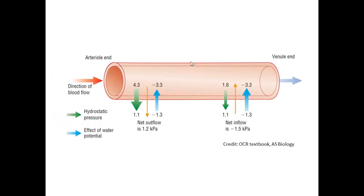Let's have a look at some numbers. These are numbers taken from your OCR textbook and in the arterial end we have green arrows representing hydrostatic pressure - apologies if you are red-green colour blind, hopefully it is not too much of a problem. And 4.3 kilopascals in there and 1.1 kilopascals outside so overall we have a net hydrostatic pressure going out of 3.2.